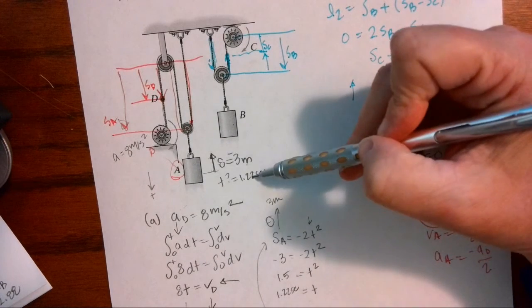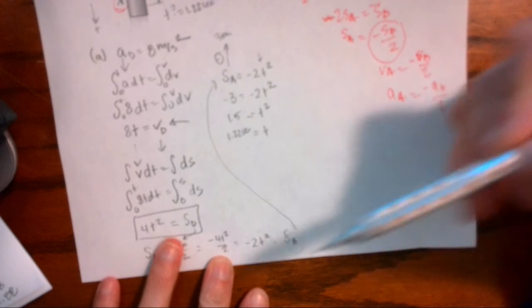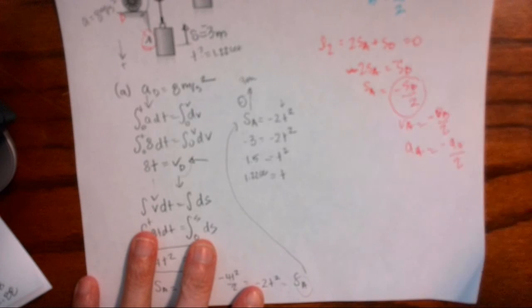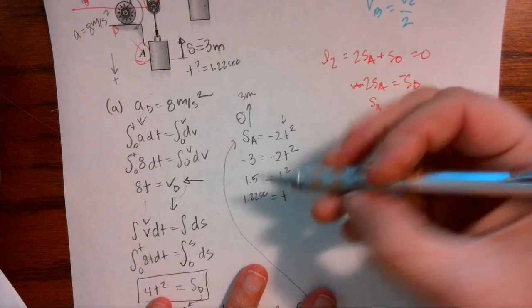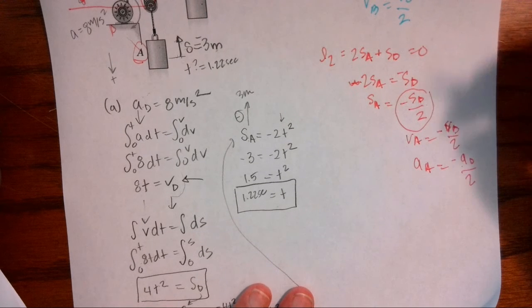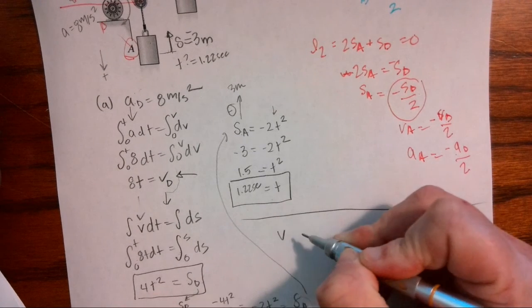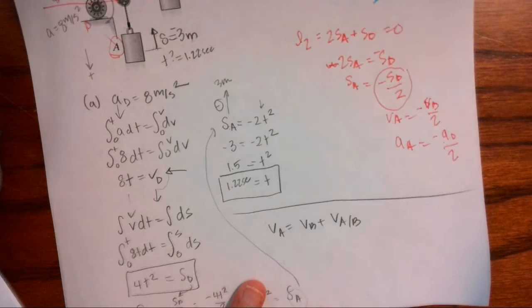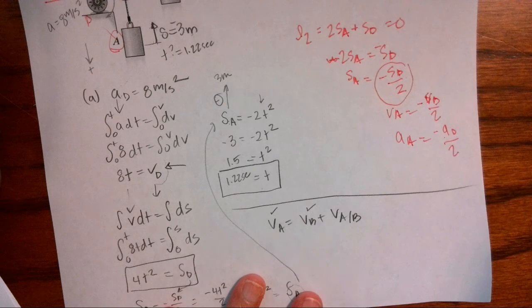If I wanted to calculate the velocity at this point in time, I can take my velocity equation and plug in one point two two. I can get the velocity of A. I could also get the velocity of D because I have a velocity equation of D. So I found the time needed for the box to raise. The next question says the relative velocity of block A with respect to B when it occurs. So if I want the relative velocity, I want the relative velocity of block A with respect to B. Then my equation is going to look like this. And now I need to find the velocity of A at one point two two, the velocity of B at one point two two, and then I can calculate that relative.